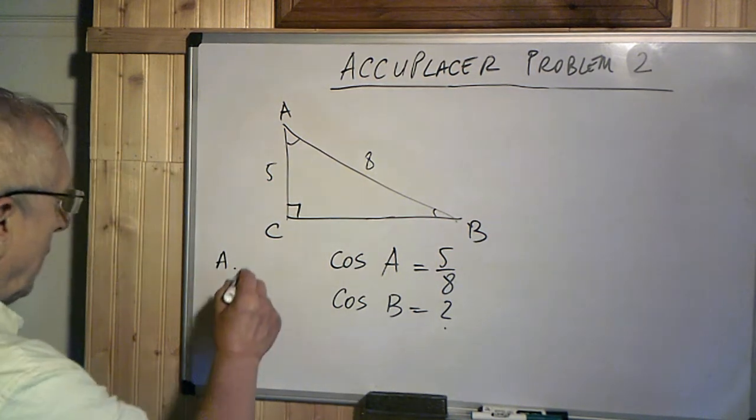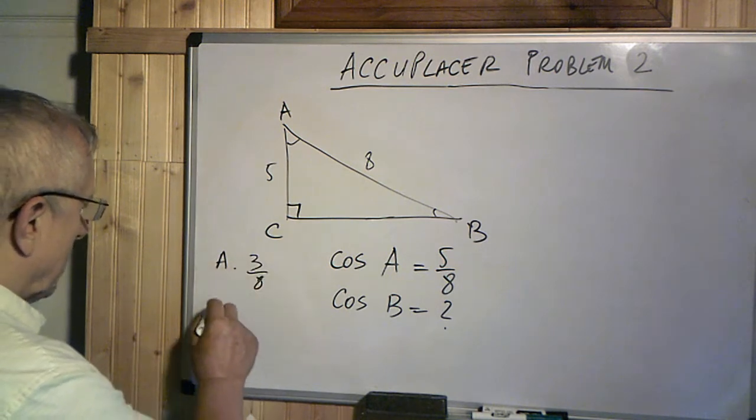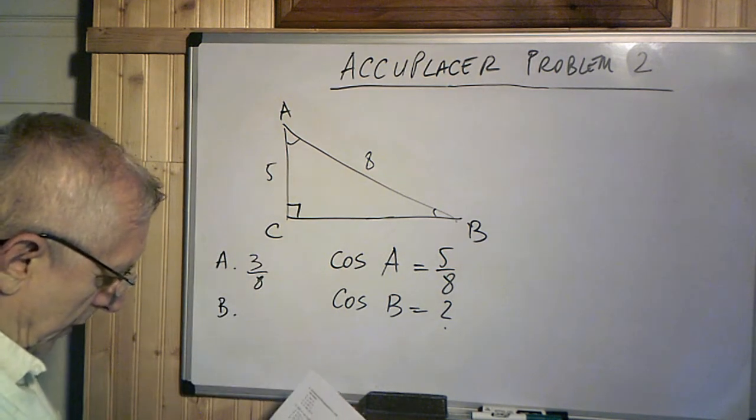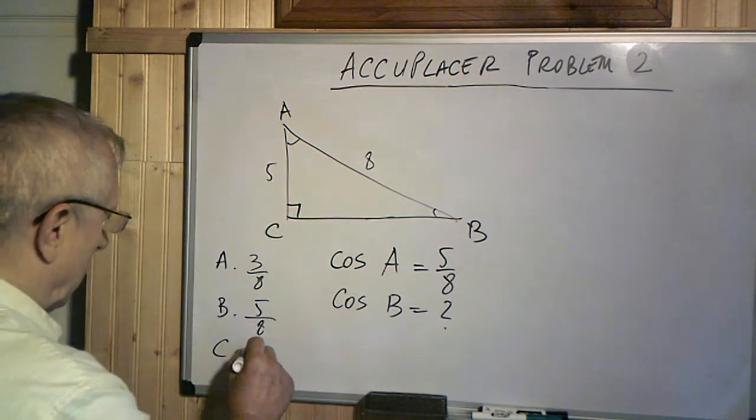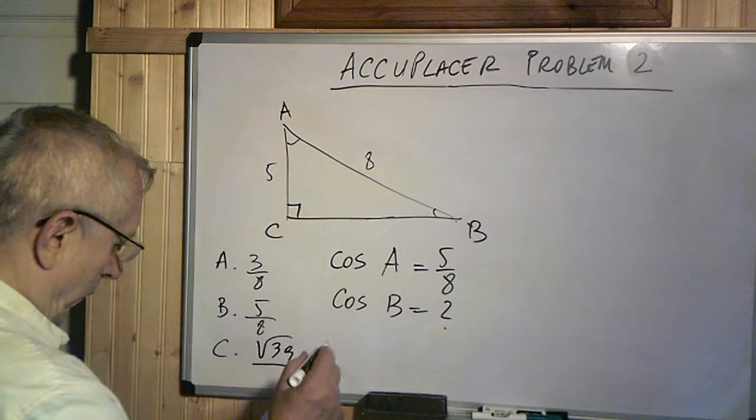There is a list of answers here. 3 over 8 is one. The other one is 5 over 8, and another one is square root of 39 over 8.